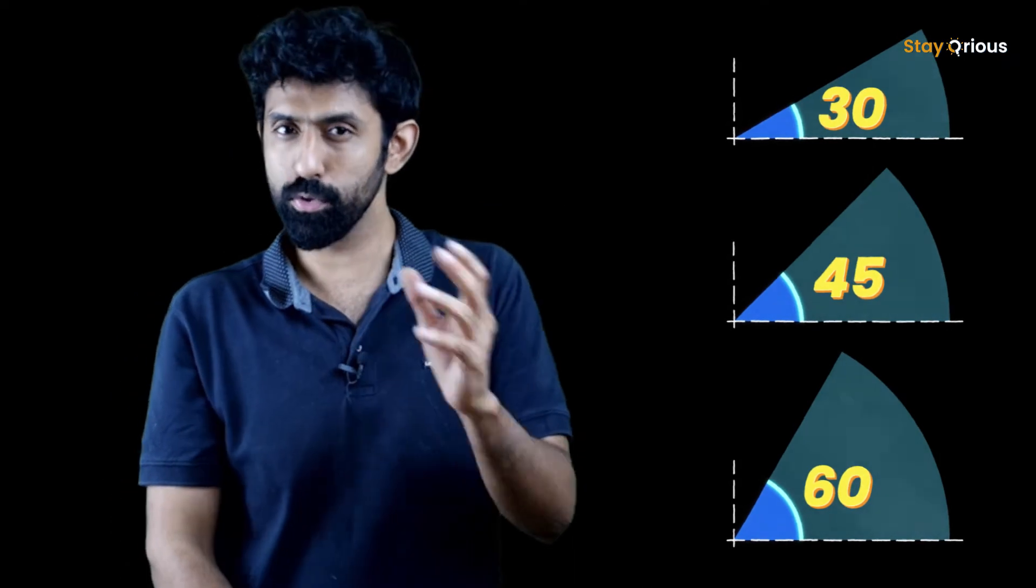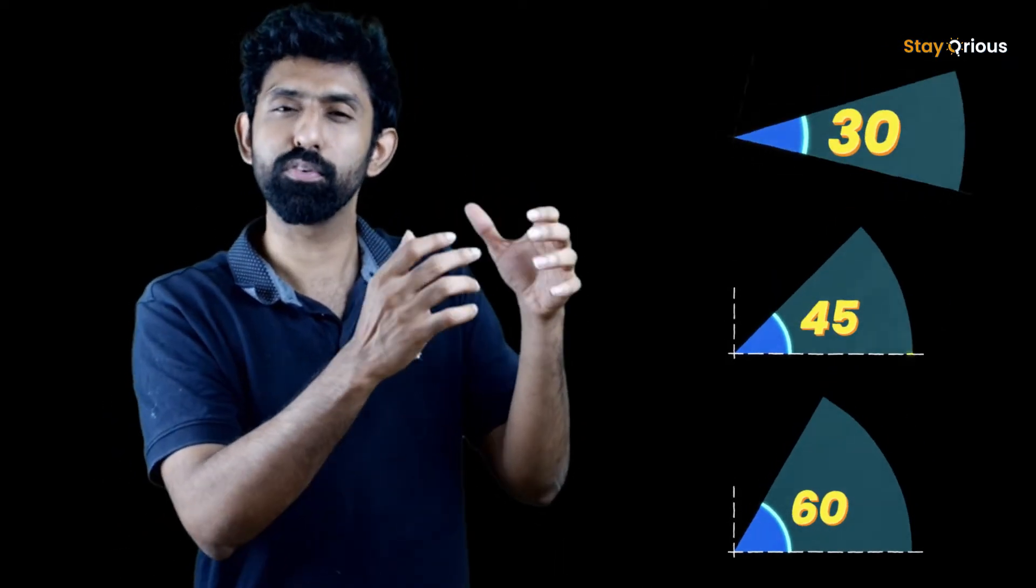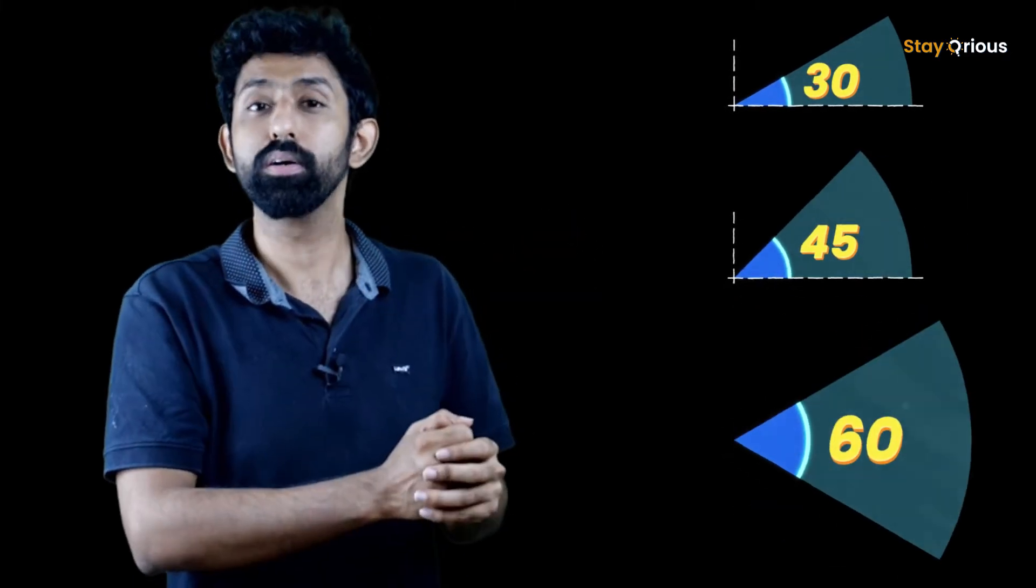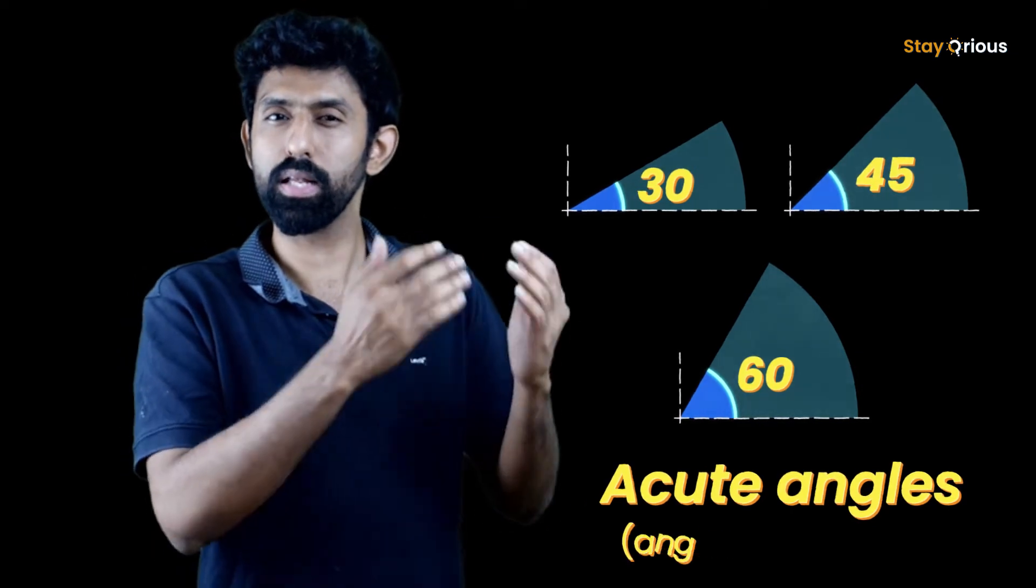These are very common angles you'll keep using. So it's good to know how they look like. Look at 30 very sharp, 45, little less sharp, 60, even less sharp. And these are all called acute angles. The sharp angles that are less than 90. I want you to turn but not 90 fully.